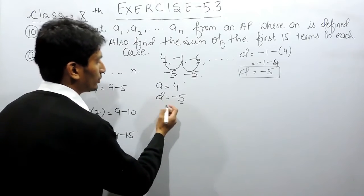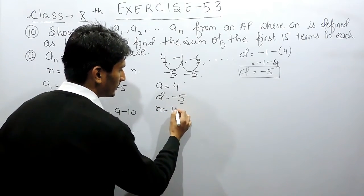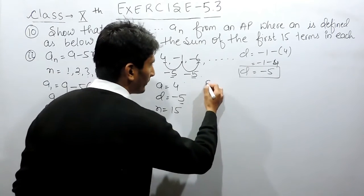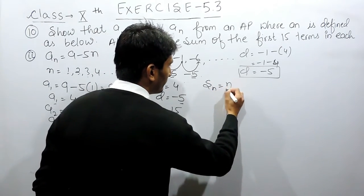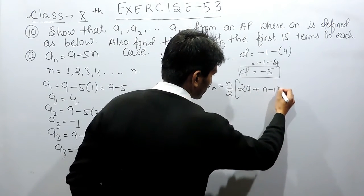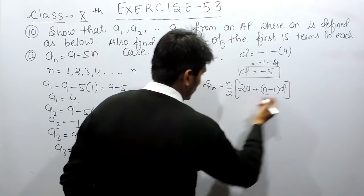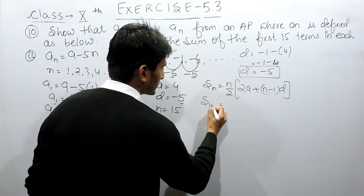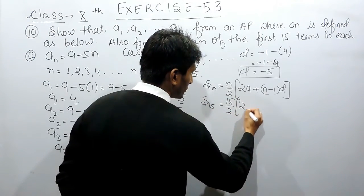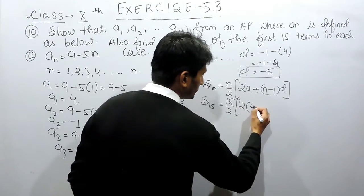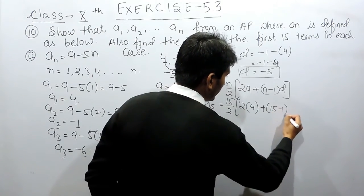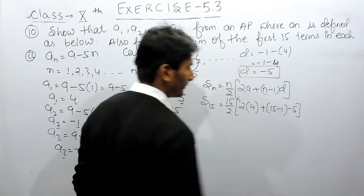Now you have to find the sum of n terms, where the number of terms is 15. To find the sum of n terms we have a formula. We need to find the sum of 15 terms, so this will be 15 upon 2 multiplied by 2 times the first term — which is 4 — plus n minus 1 times d. The number of terms are 15 and the common difference is minus 5.